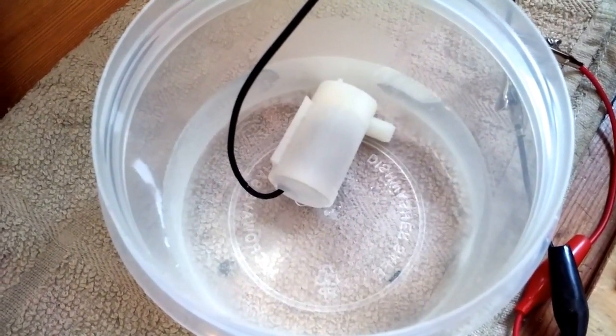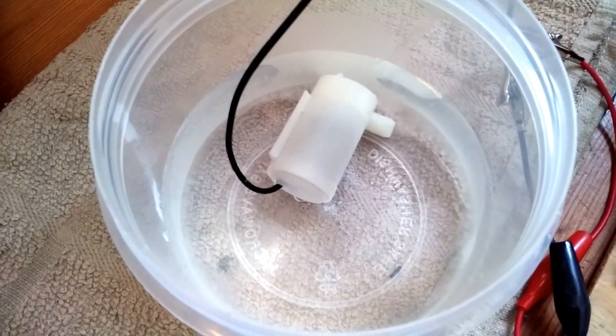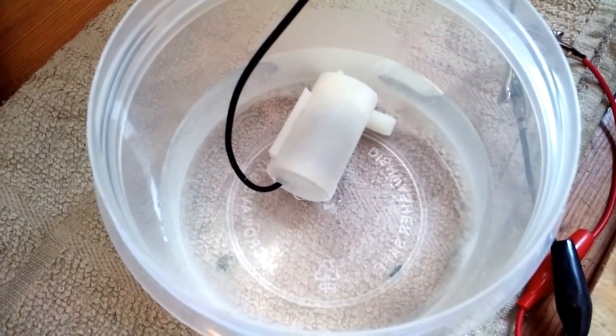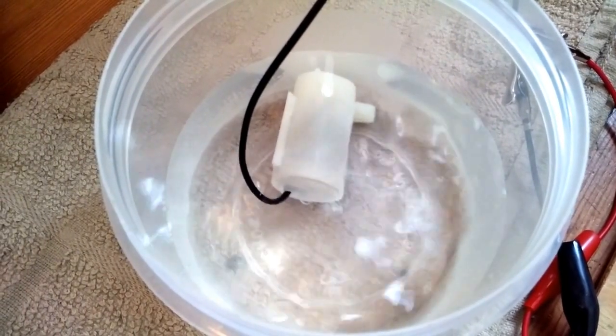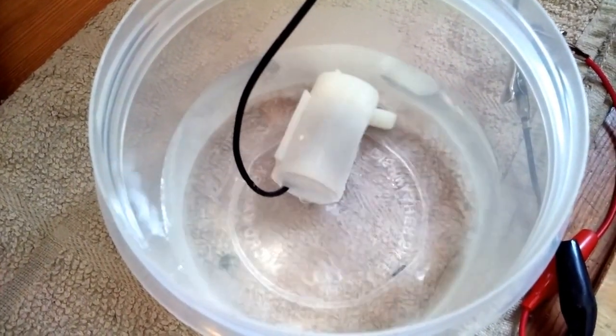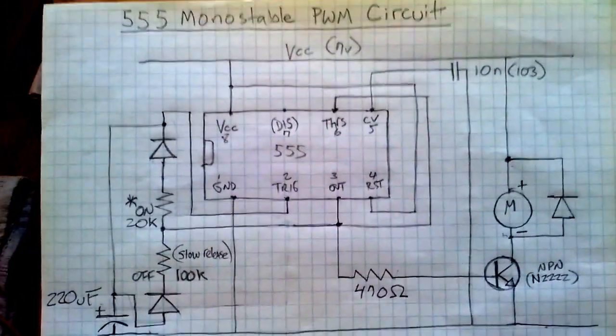What I've got going on here is a small 3 to 6 volt motor water pump being powered by a 555 monostable pulse width modulation circuit. That's what we've got right here. I'm going to go over this schematic in a minute.